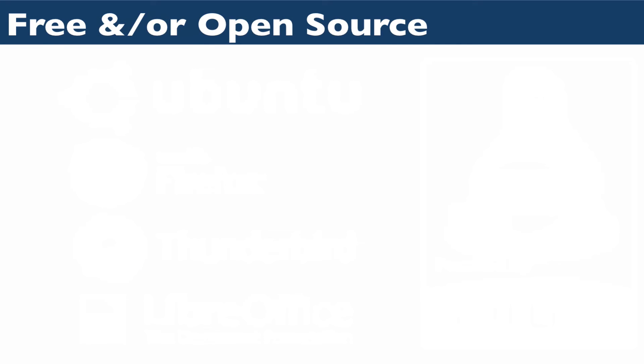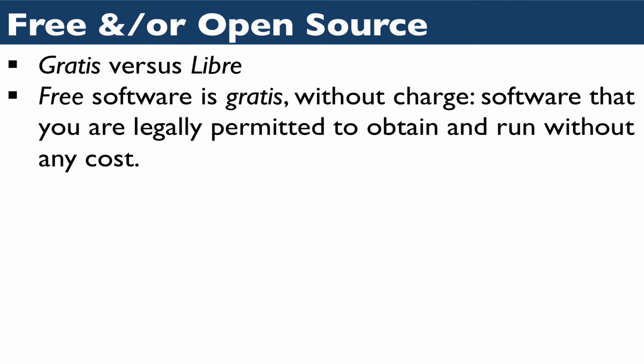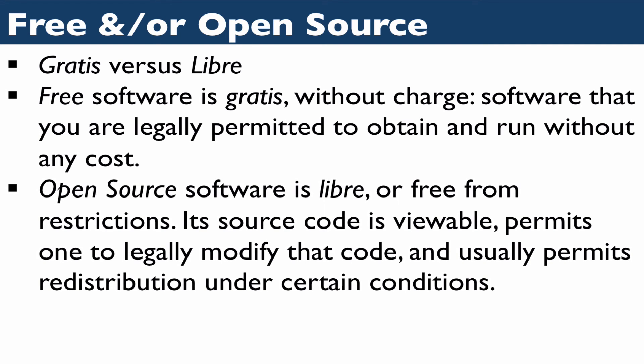The free philosophy actually distinguishes between two different kinds of freedom: gratis versus libre, although it's easier to use the terms free and open-source. Gratis means at no cost — software that is free means you can get and run it without paying anything. Software that is libre, on the other hand, is open-source in that a programmer can see into the source code, modify it, and even redistribute the code under certain conditions.